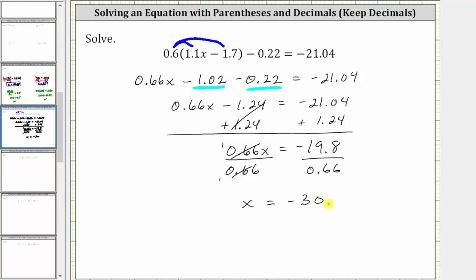The solution to the equation is x equals negative 30, which means if we substitute negative 30 for x back into the original equation, it will satisfy the equation or make the equation true.